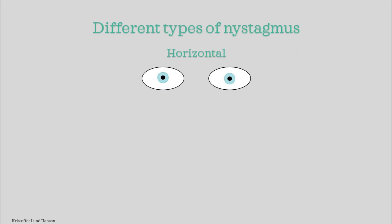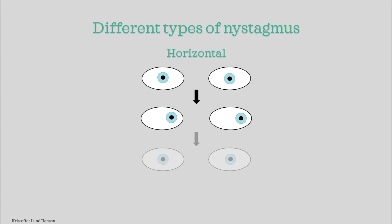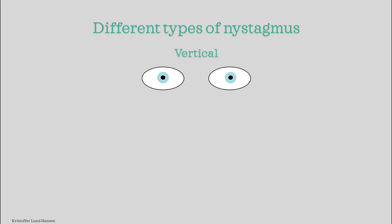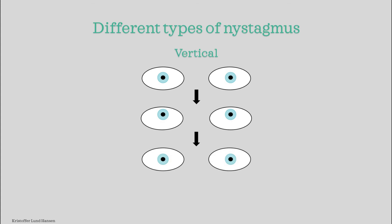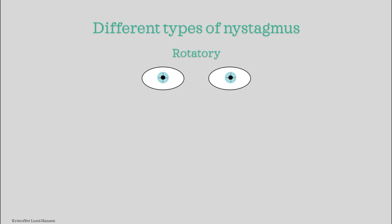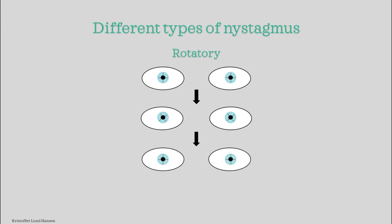We also describe nystagmus according to the direction the eyes move. First, we have horizontal movements, where the eyes move in a horizontal plane — either left or right — before going back towards the center. It can also move vertically, where the eyes move up and down before returning to center. Lastly, and quite rare, is rotatory nystagmus, where the eyes kind of rotate around their own center before returning to the original position.